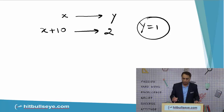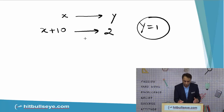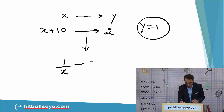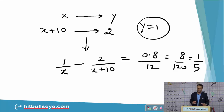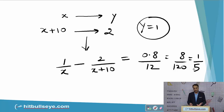Once y is established as 1, you can form the equation: 1 over x minus 2 over (x plus 10) equals 0.8 divided by 12, or 8 over 120, which simplifies to 1 over 5. This is because the saving is 80 paise per dozen, so keeping units in mind, this is the final equation. You then check the options to see which value of x satisfies this equation, and x equal to 5 fits.